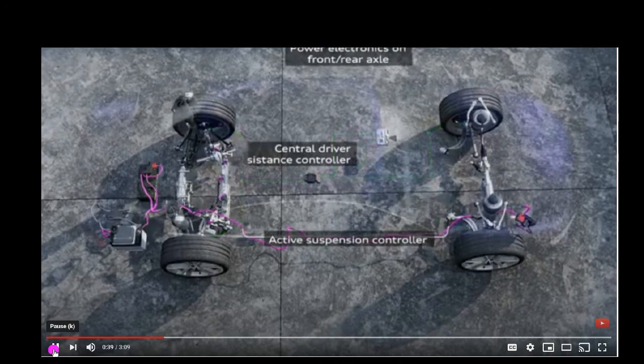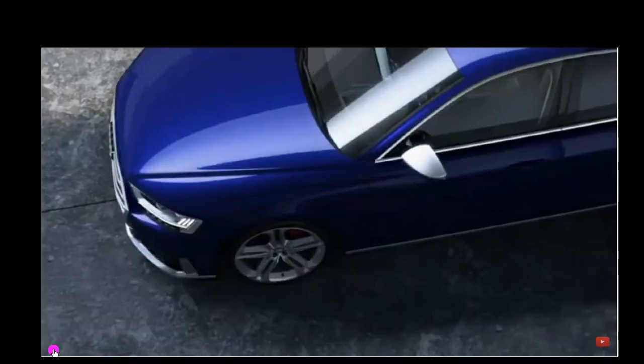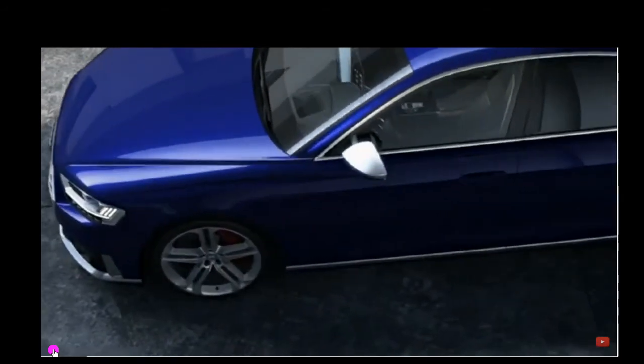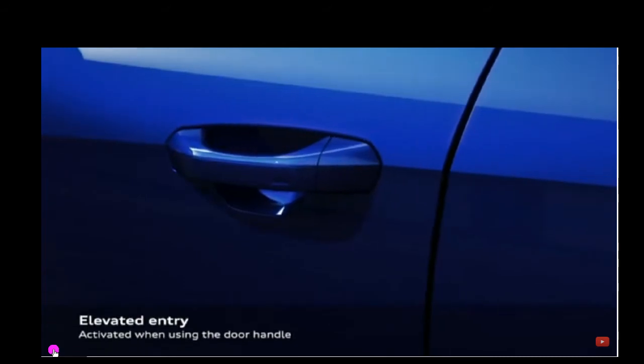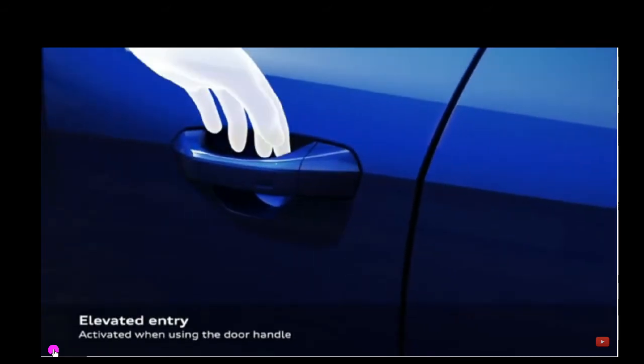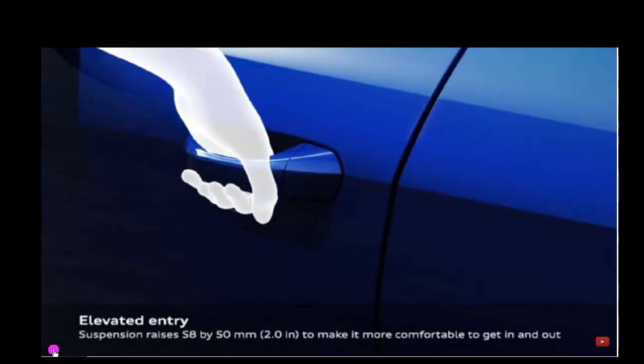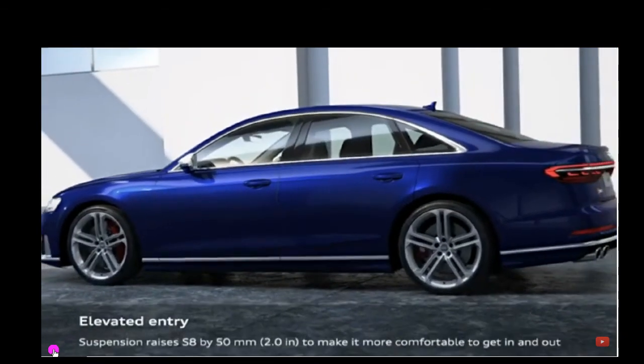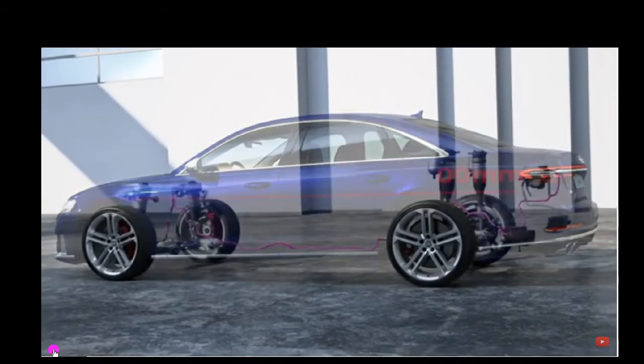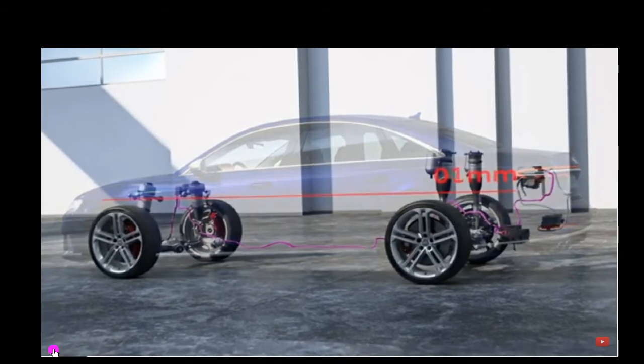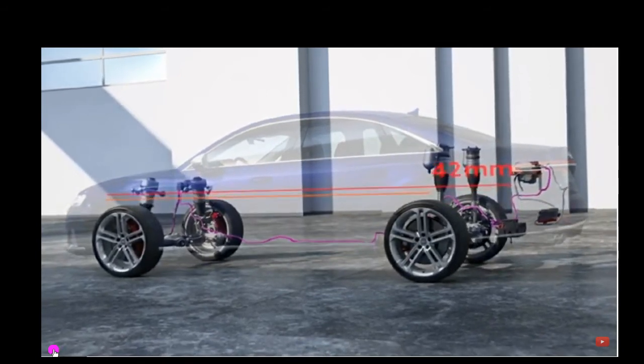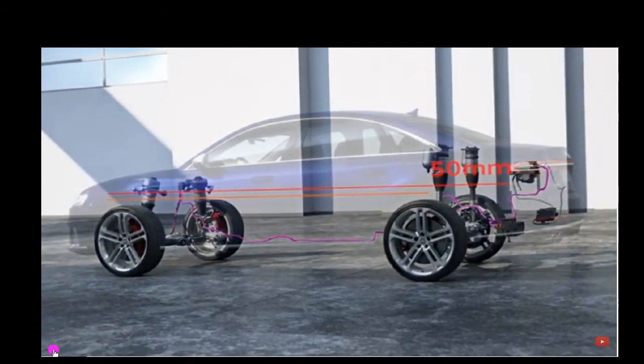Reducing lateral roll. Elevated entry is going to raise the vehicle by two inches to help assist getting in and out, increasing the shock or strut height. Shut the door, it goes back down to normal.